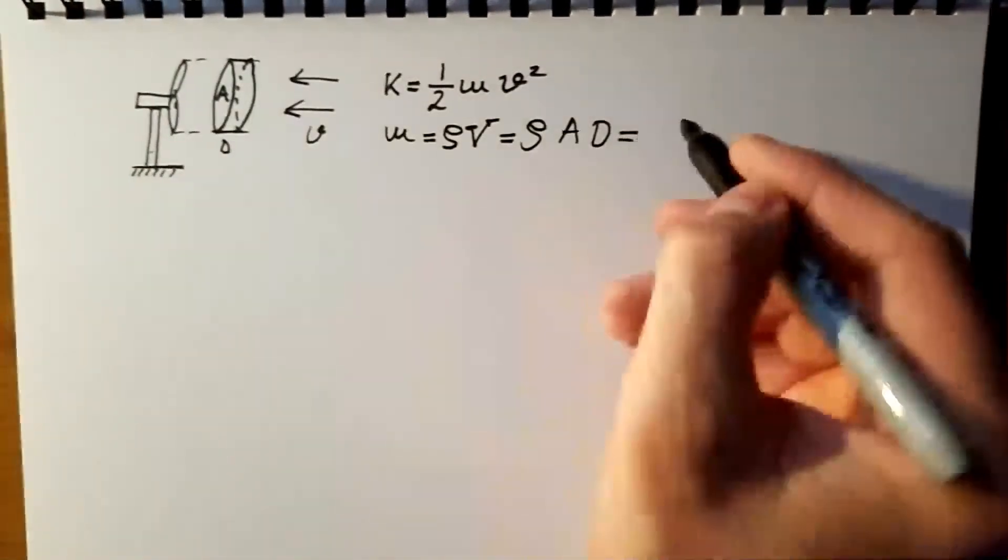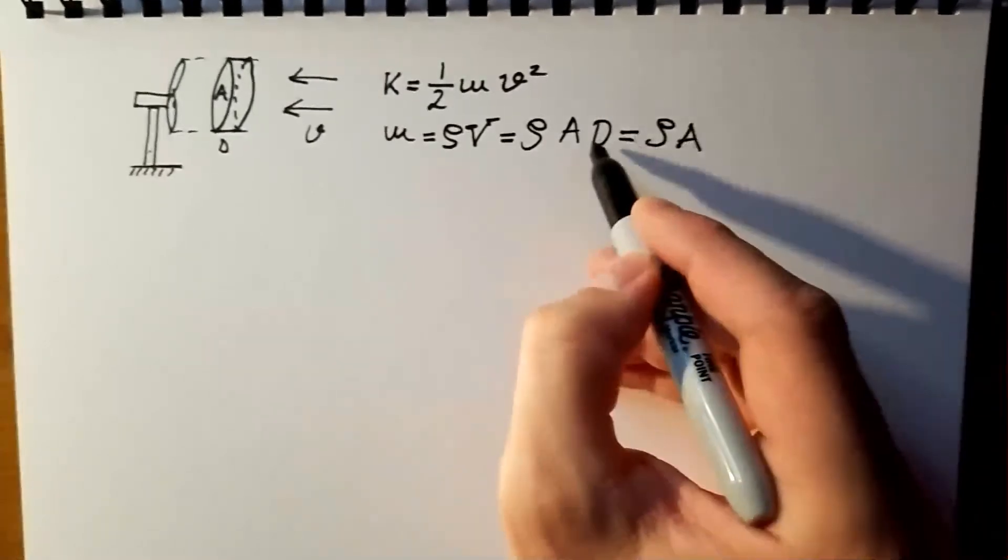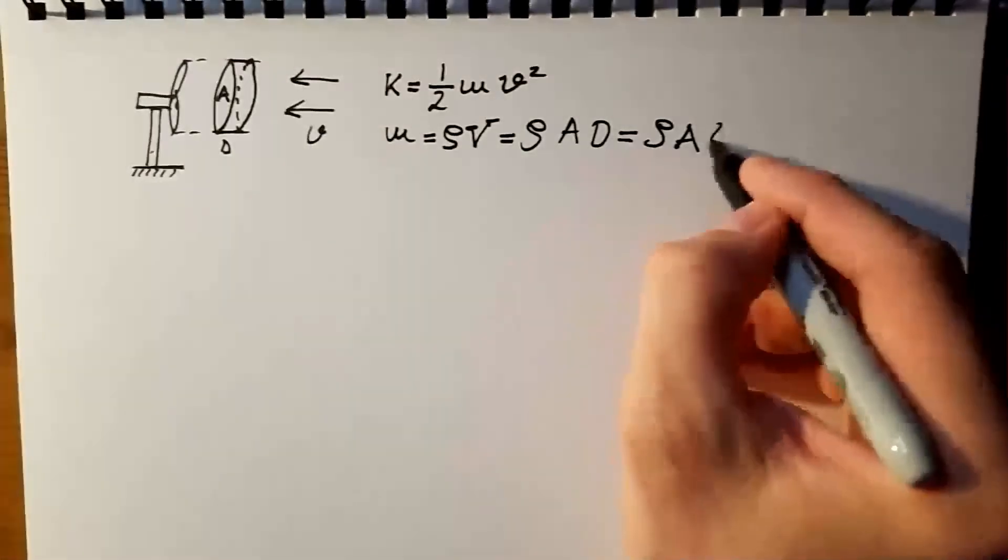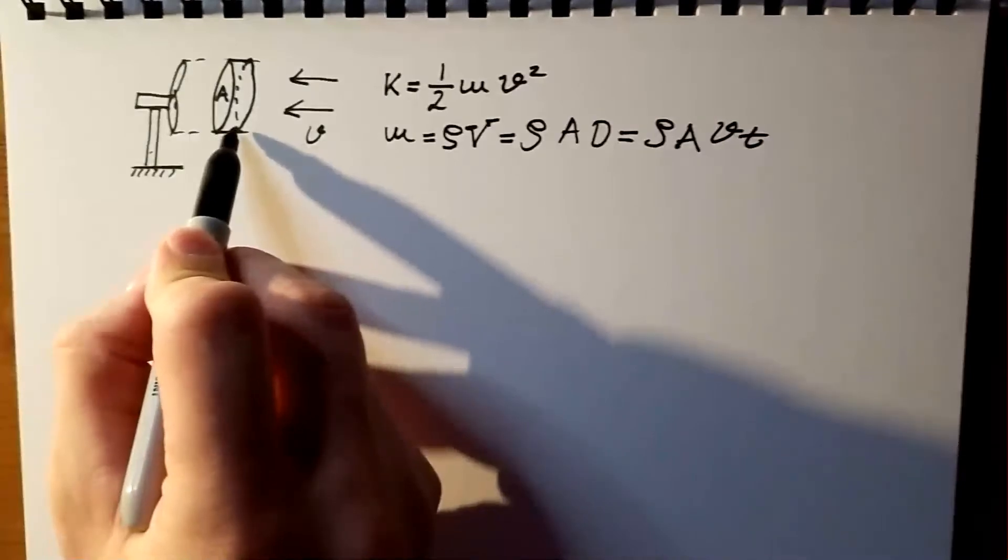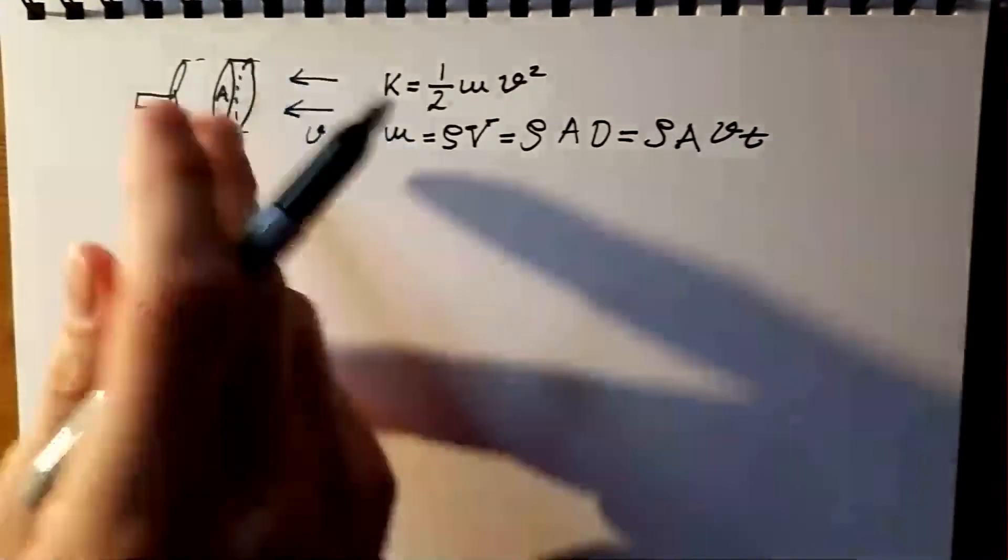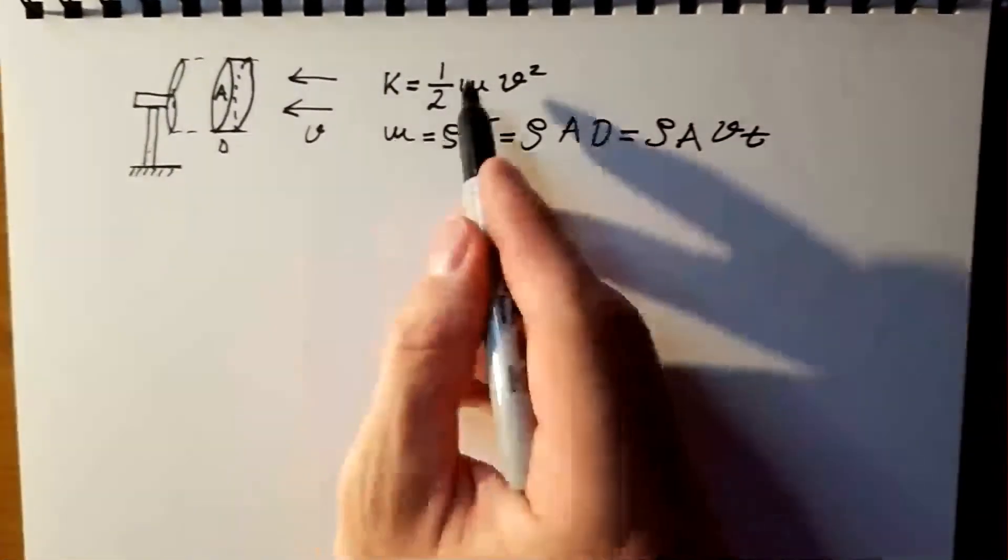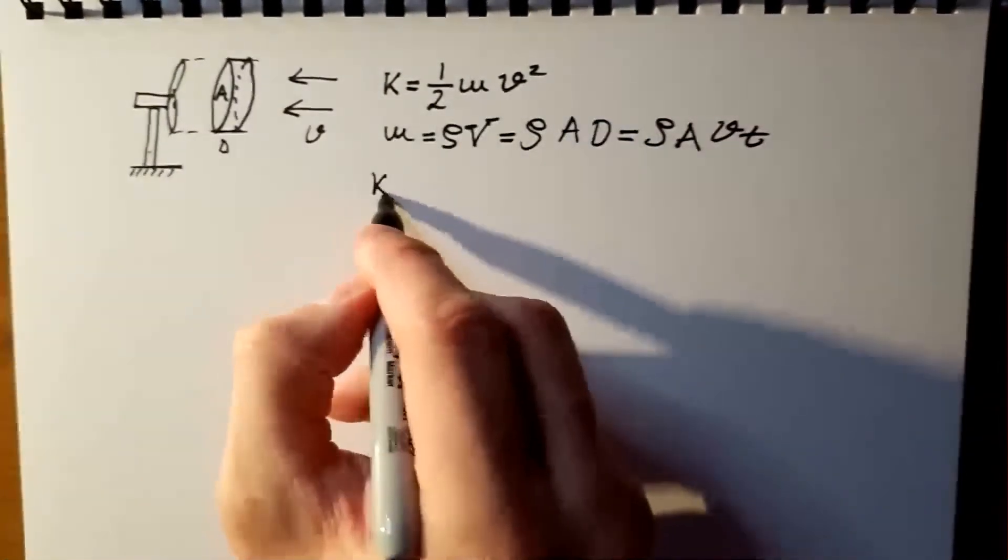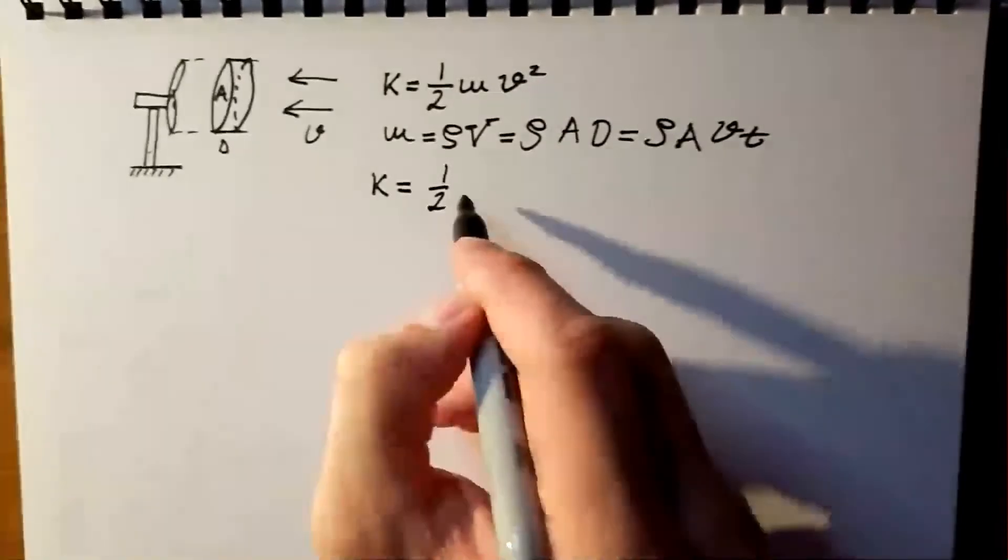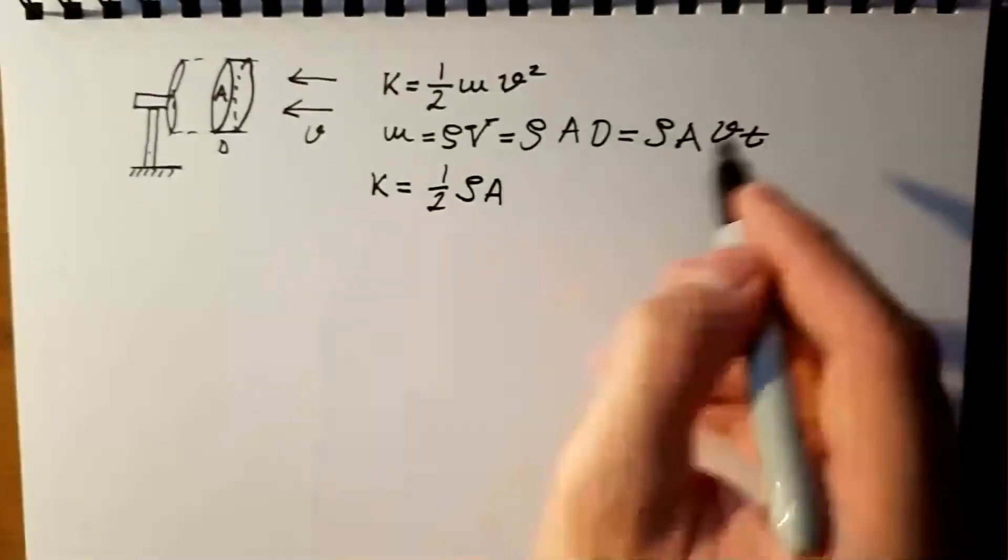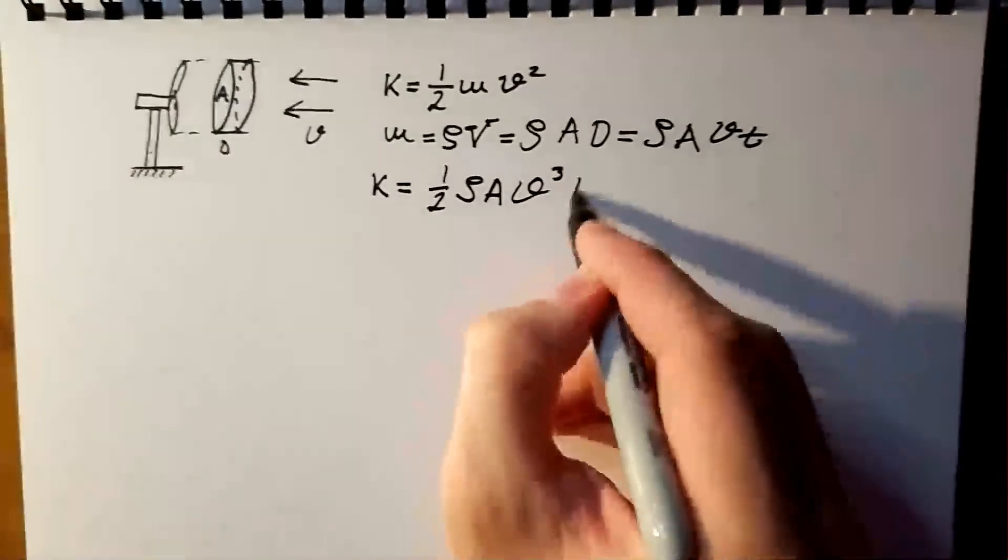But, I know also that I can express this depth in terms of the velocity times time. So, depth is simply the velocity that this parcel of air travels over the time t. Now, I will substitute this M in the above equation, and kinetic energy, that I call k, is ½. Mass is density times area times velocity combined with velocity squared is velocity to the power 3 times time.